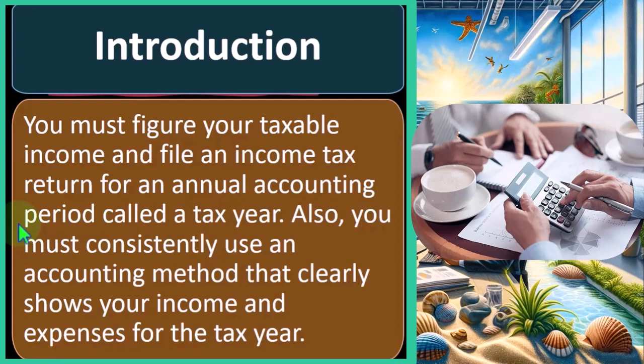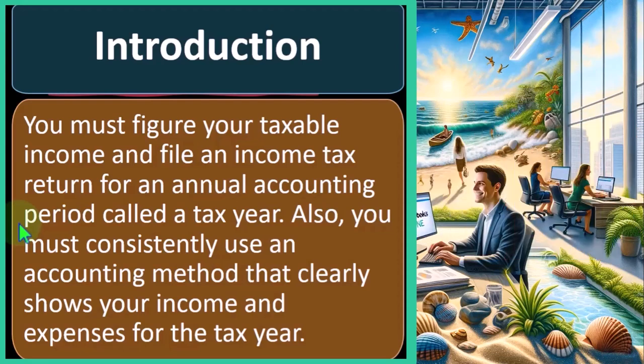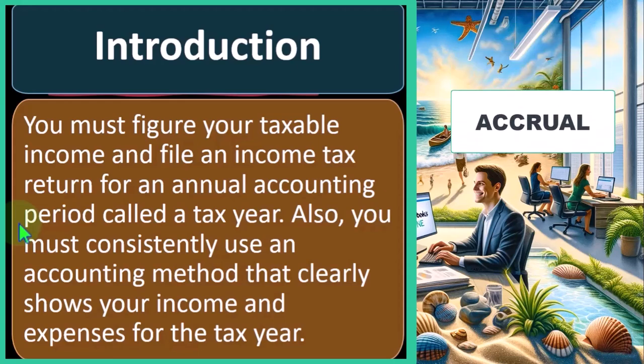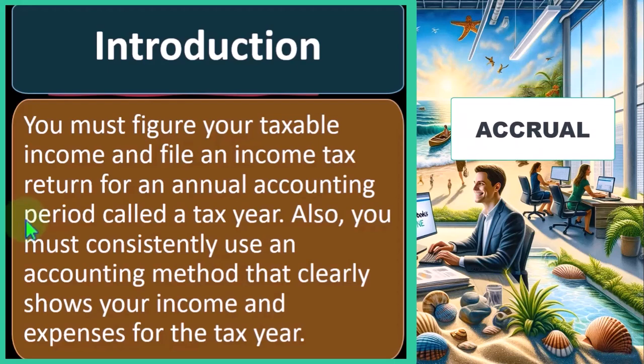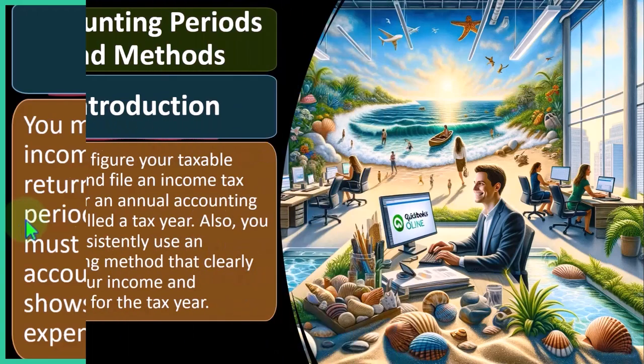You must consistently use an accounting method that clearly shows your income and expenses for the tax year. The primary two methods are a cash-based method and an accrual-based method, though in actuality we're usually using some kind of hybrid. For taxes, we often use a cash-based method, but the IRS tax code will force accrual treatment in some areas — such as property, plant, and equipment, where you put it on the books as an asset and depreciate it rather than expensing it immediately. We'll discuss methods more in future presentations.